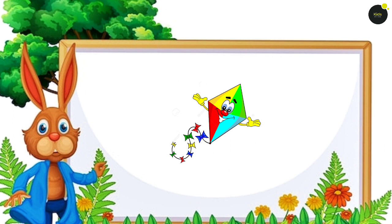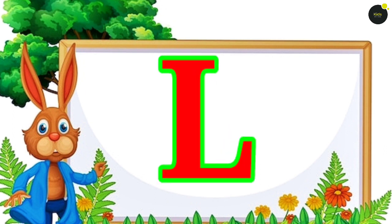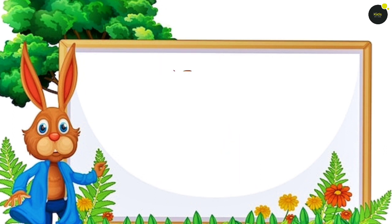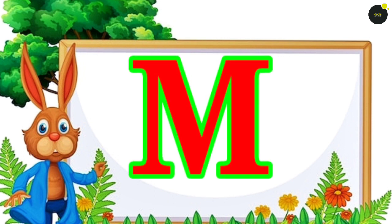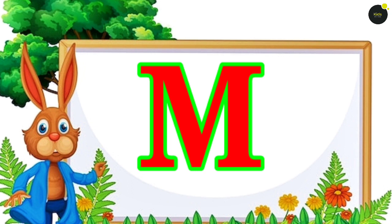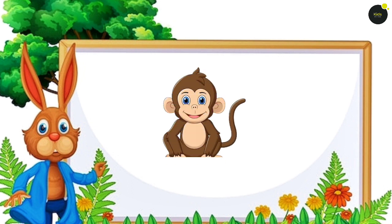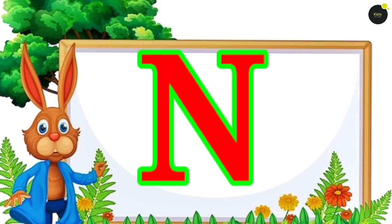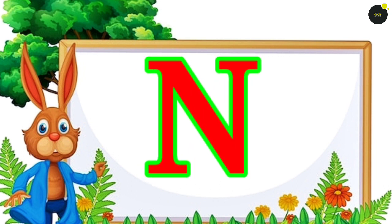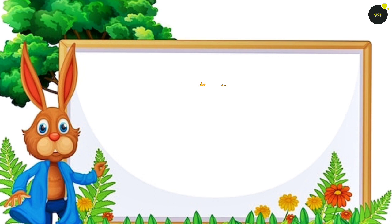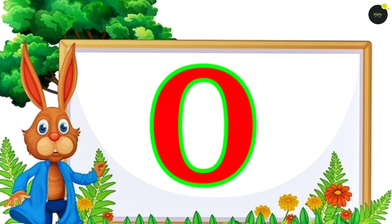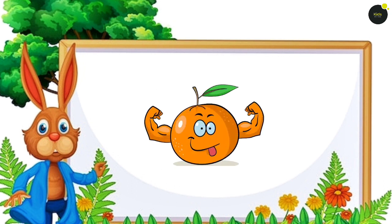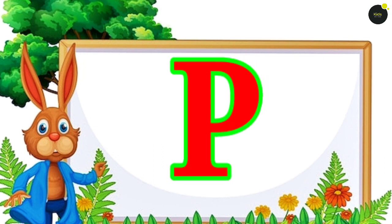Dye means Bato. E for Lion. Lion means Save Ampour Monkey. Monkey means Binder. N for Nest. Nest means Ghosla. O for Orange. Orange means Santra.